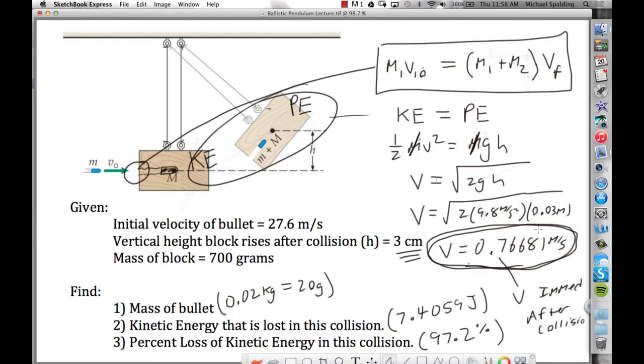Okay. And notice, it is this velocity right here. So the velocity we just solved for, the 0.766 here, it's this velocity. Alright.